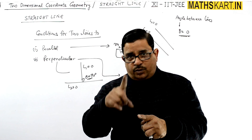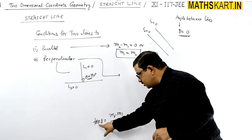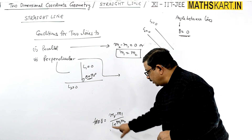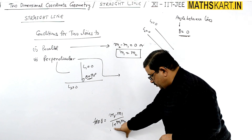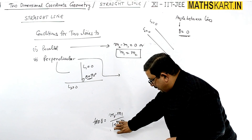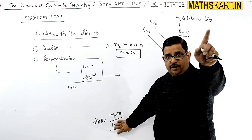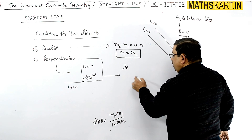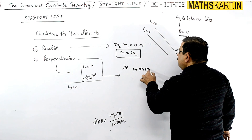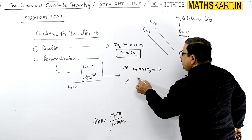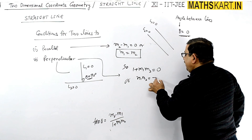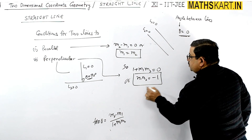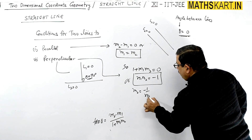For perpendicular lines, the angle between them is 90°, and tan(90°) is infinite. For the expression to be infinite, the denominator must be zero: 1 + m1·m2 = 0, giving m1·m2 = −1.